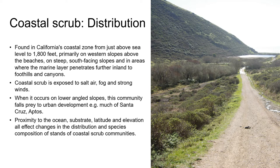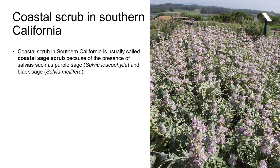Like Coastal Strand, which it's sometimes adjacent to, Coastal Scrub is exposed to salt air, summer fog, and strong winds. Its proximity to the ocean, the substrate, latitude, and elevation are all factors that influence changes in the distribution and species composition of Coastal Scrub along California's coast.